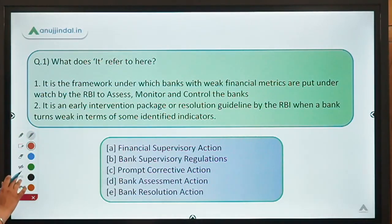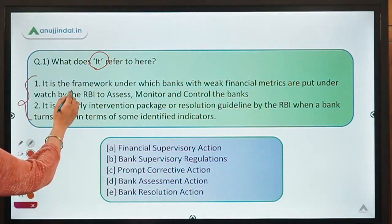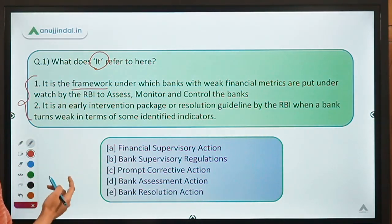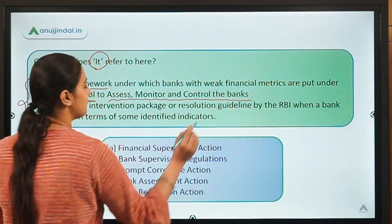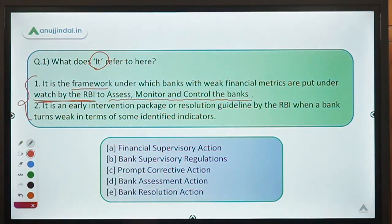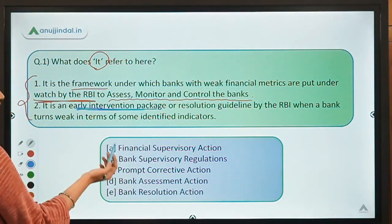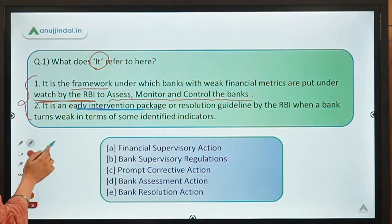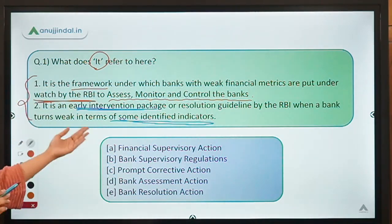So let's get started. This is the first question — what does it refer to? Here are two statements and we have to identify the concept being talked about. The first statement says it is the framework under which banks with weak financial metrics are put under watch by RBI to assess, monitor and control the banks. The second statement says it is an early intervention package or resolution guideline by RBI when a bank turns weak in terms of some identified indicators.